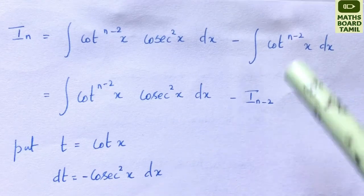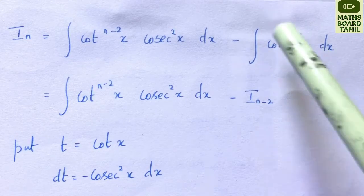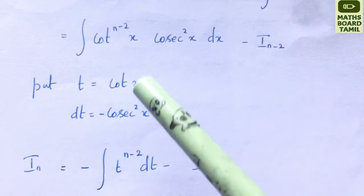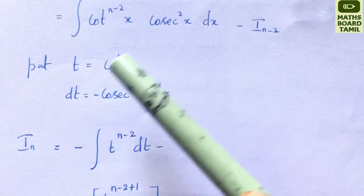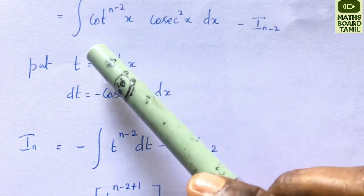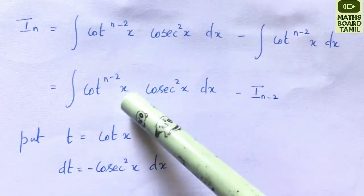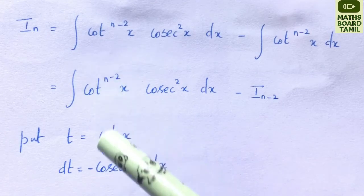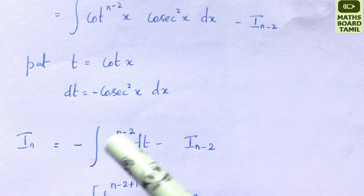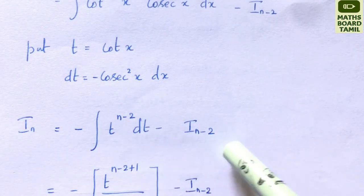We want to find I sub n-2. Integration of cos square n x dx. We differentiate and substitute: t power n minus 2. We have dt and minus dt, so minus integration of t power n minus 2 dt, giving minus I sub n-2.